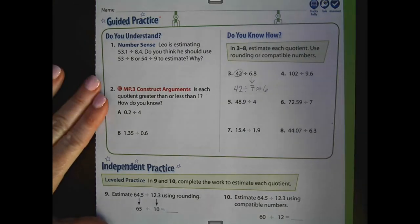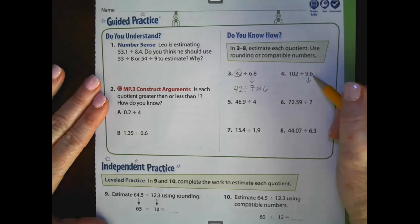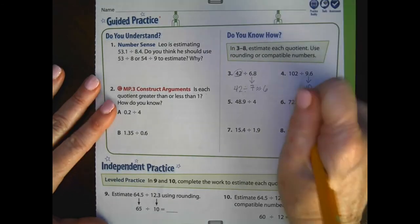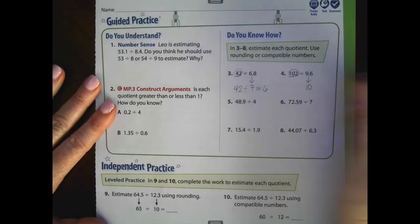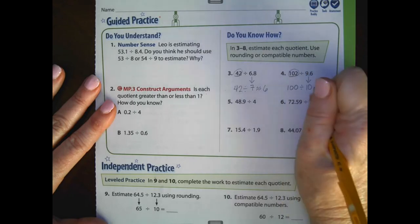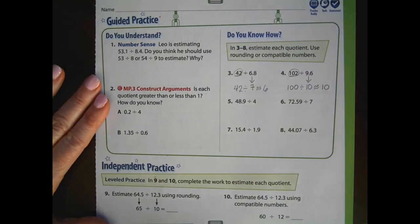102 divided by 9 and 6 tenths. Again, I'm going to round the divisor to the nearest whole number. It is 10. And I know that a number very close to 102 that's divisible by 10 is 100. So 100 divided by 10 gives me an estimated quotient of 10.